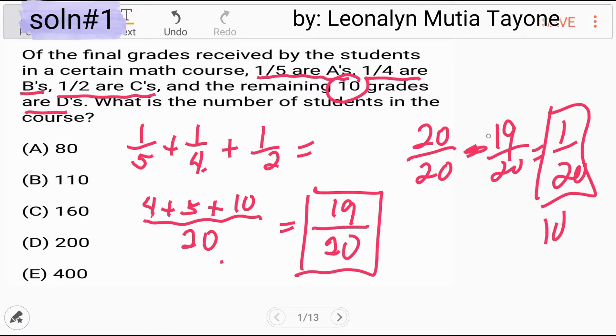So itong 1 over 20, yan yung 10. So ang gagawin mo lang ay i-multiply mo itong 10, dito this is 190 plus yung 10, that is 200.